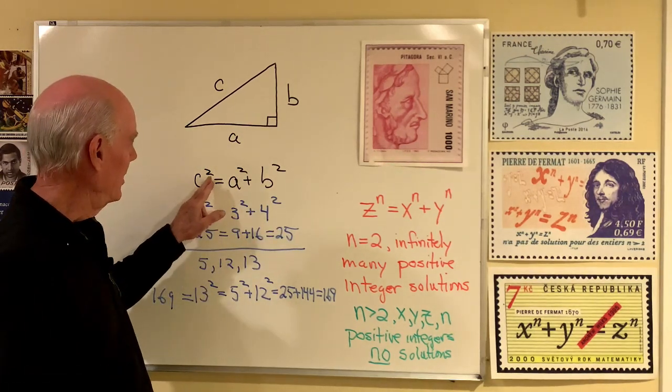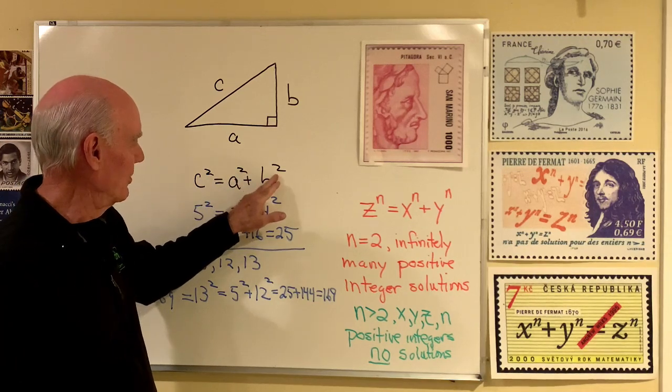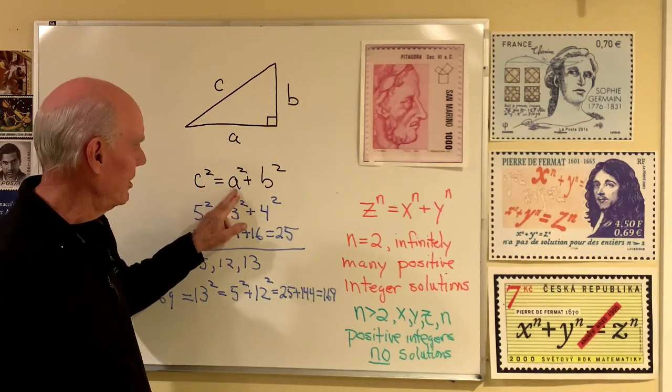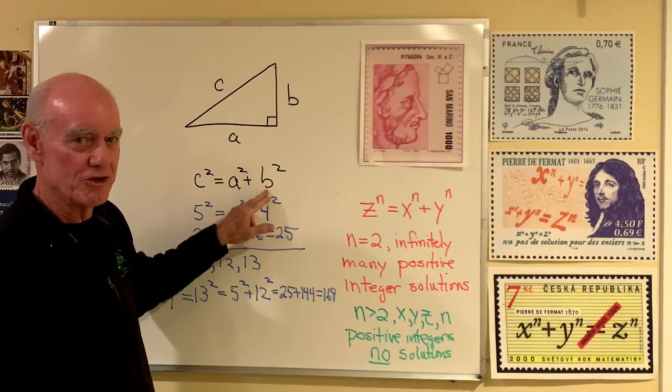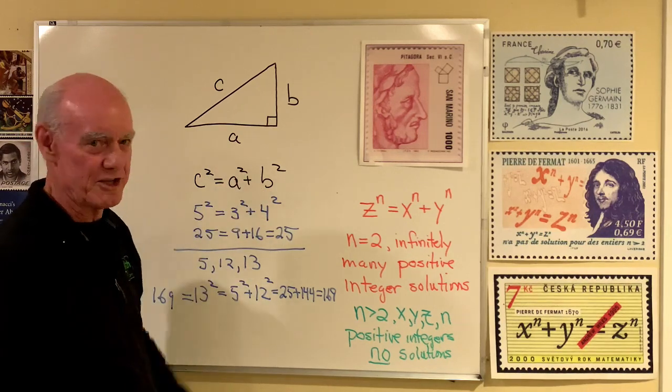So when the exponent is 2 right here, you can find an infinite number of positive integer triples like this that will satisfy that equation.